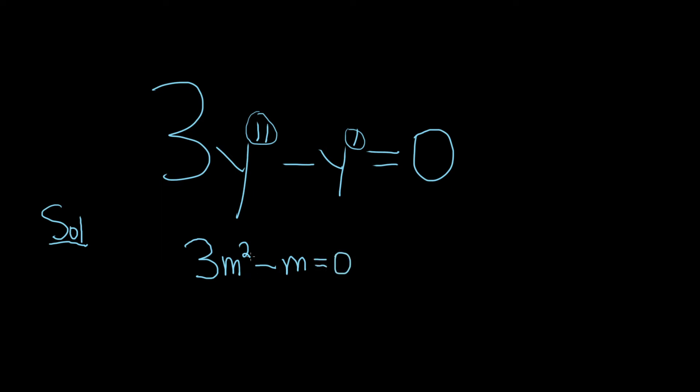This is called the auxiliary or characteristic equation. Then you just solve this. So in this case, we can factor out an m, and so we have 3m minus 1, and then this is equal to 0.